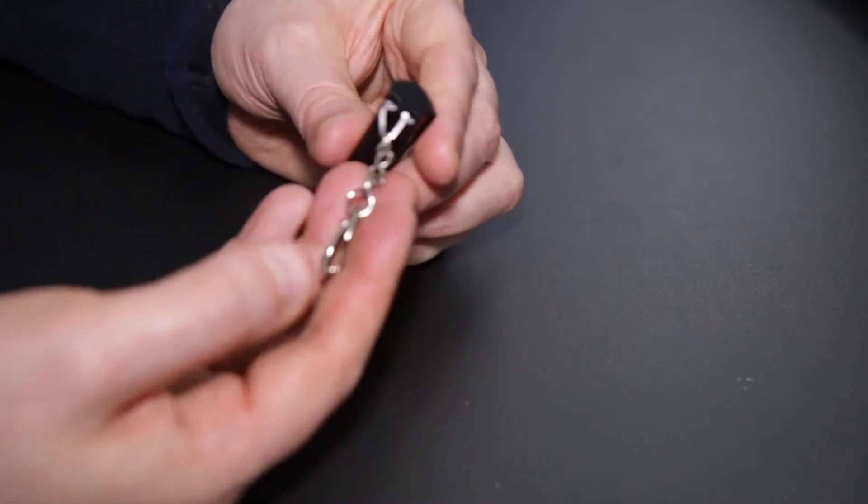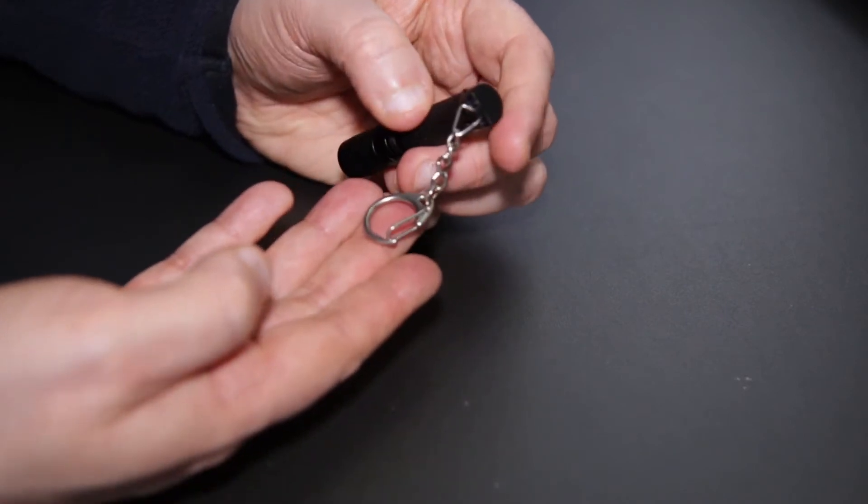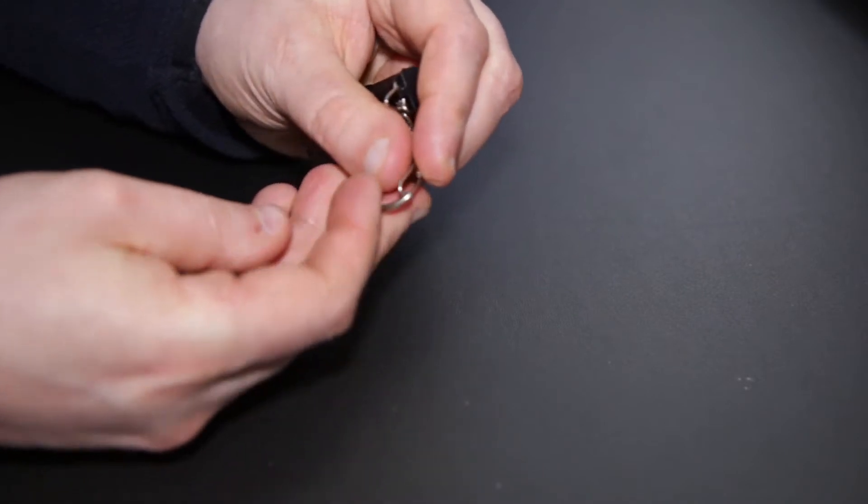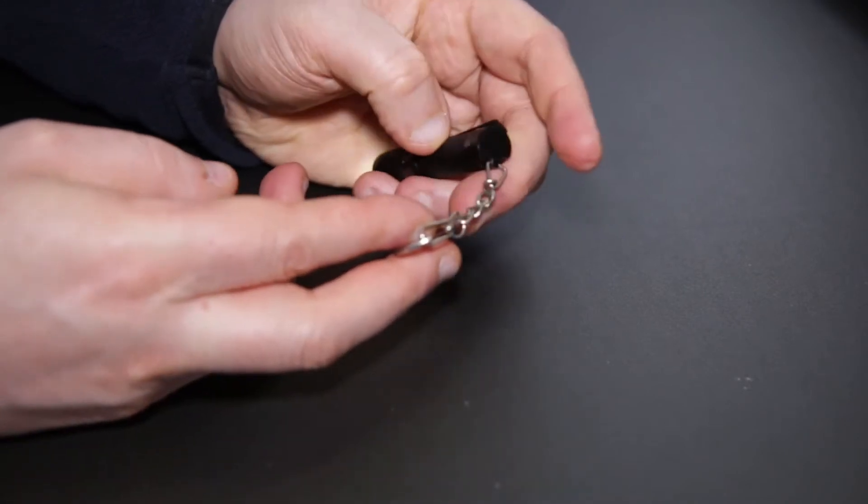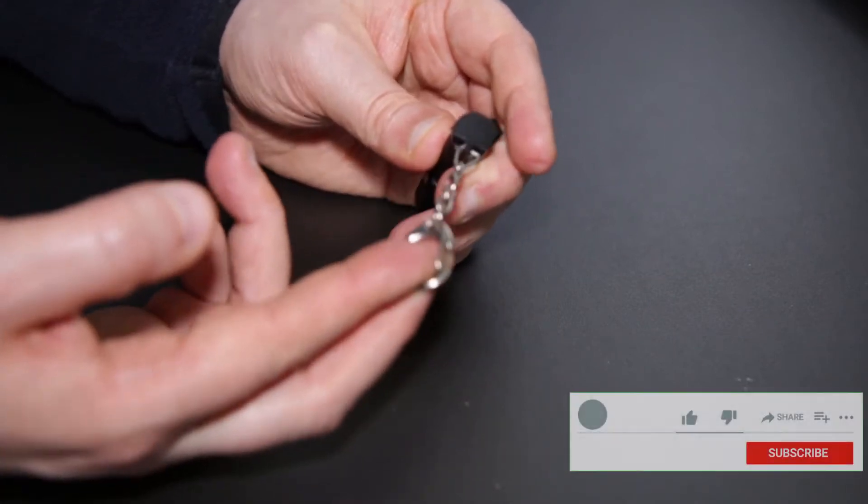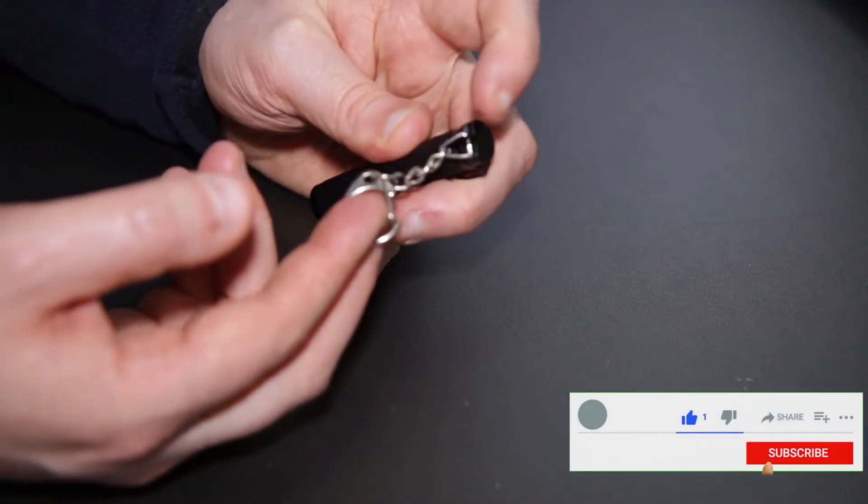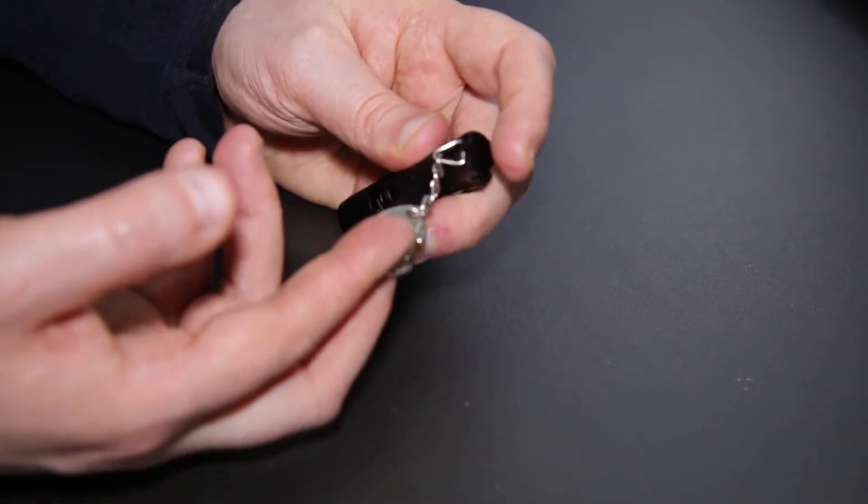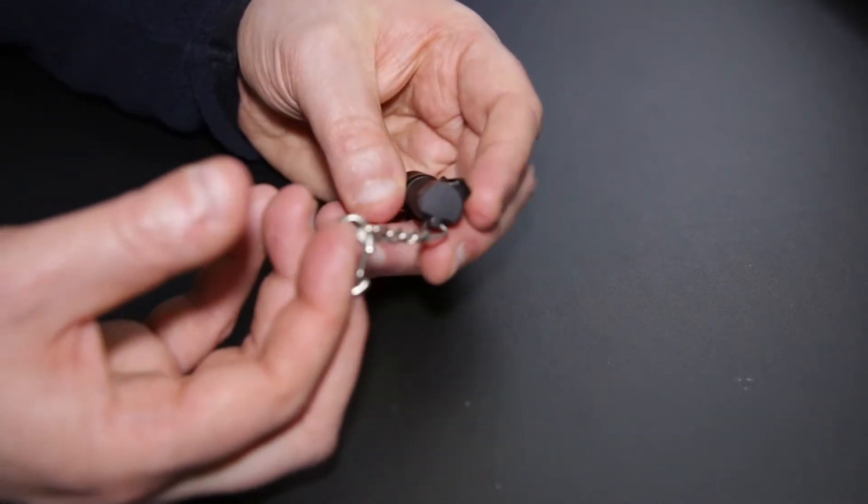I mean the keychain is pretty decent and it's got this spring loaded mechanism so you can quickly attach it and detach it from things. But to be honest I just think the attachment to the actual torch could have been done a little bit better, and it would make this absolutely perfect.